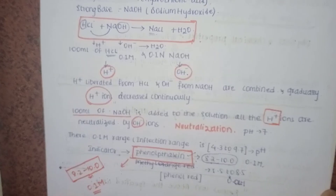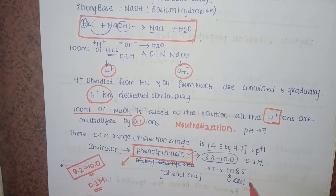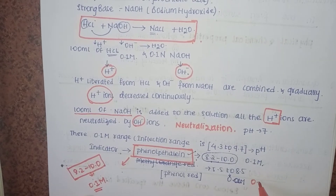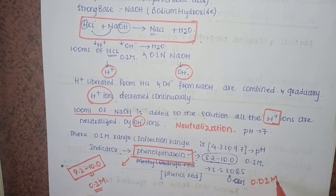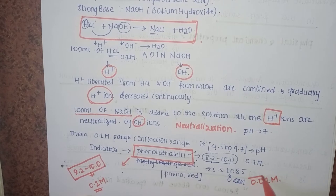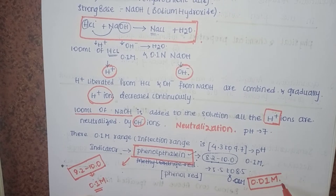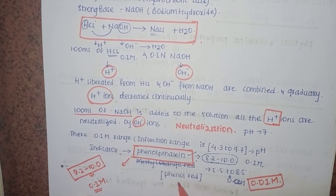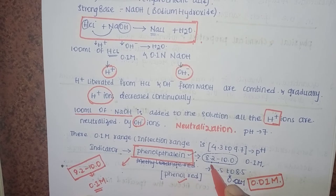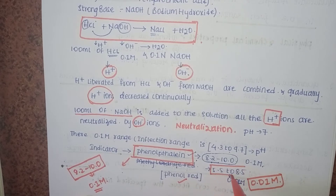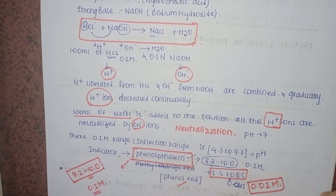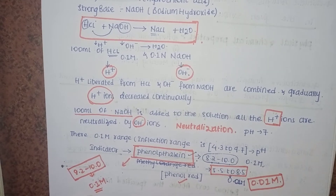If you use 0.01 M HCl with 0.01 M NaOH, phenol red indicator is used, because its pH range is 5.5 to 8.5.